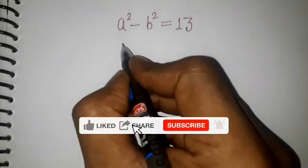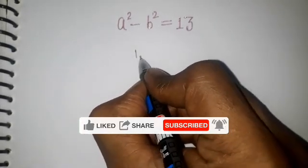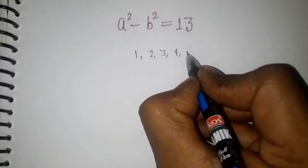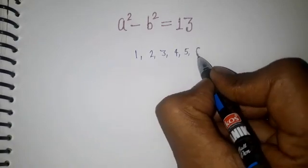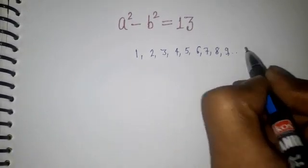You can calculate in such a way that, suppose you have natural numbers: 1, 2, 3, 4, 5, 6, 7, 8, 9, and so on.